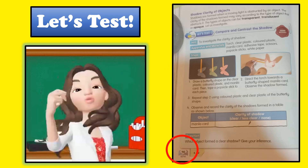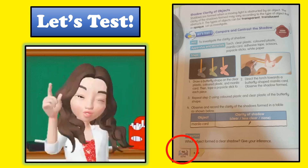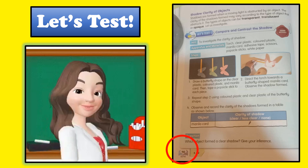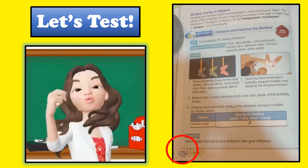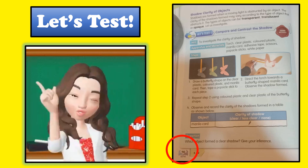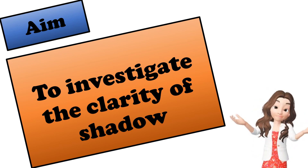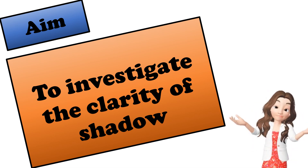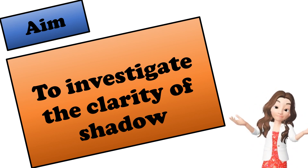Do you understand why Lana's glass does not form a shadow? Yes, her glass is transparent. To prove this, we are going to do an investigation on the shadow clarity of objects. Before we carry out our investigation, we must have a clear view on the aim. The aim of this investigation is to investigate the clarity of shadows.